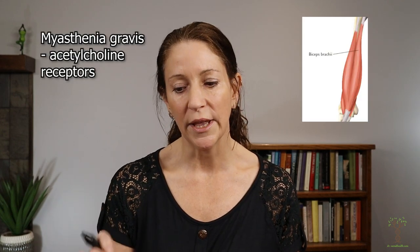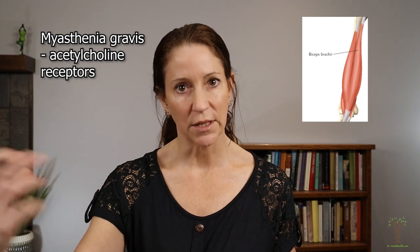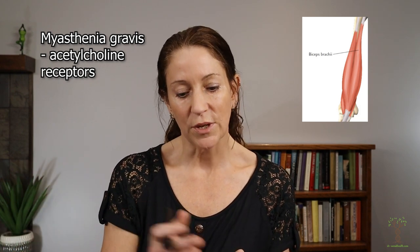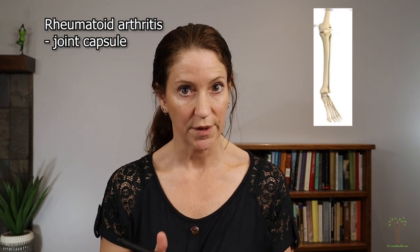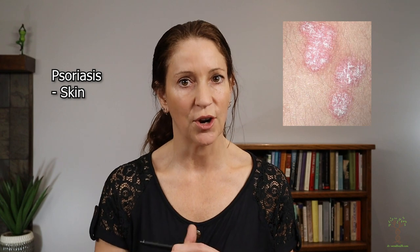Myasthenia gravis affects the muscles by attacking the acetylcholine receptor — motor neurons release acetylcholine to make muscles contract, and the immune system attacks the receptors that bind it. Rheumatoid arthritis affects the joints. Psoriasis involves the immune system targeting skin cells; the resulting inflammation increases skin cell replication, making skin very thick, dry, and hard. All these diseases share the same underlying mechanism of auto-reactive lymphocytes, differing only in which tissue is targeted.